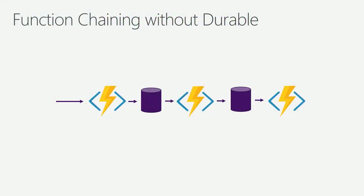The way you'd traditionally have to build that is with function one dropping it in a queue, function two triggering and doing its short processing, then dropping it in a queue and hitting function three. It's totally fine — you can do it that way — but it's a bit cumbersome as a developer or operator to write this decoupled code as independent functions, managing it, deploying it, and looking at the health of that pipeline can be challenging.